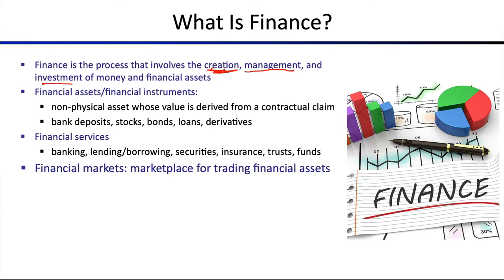The definition of money depends on how you look at it. Money could be defined by a central bank, it could be a token that you define and say 'this is money,' or you could define cattle as a form of money. Financial assets or financial instruments are non-physical assets in most cases whose value is derived from a contractual claim. They can be bank deposits, stocks, bonds, loans, derivatives, and so on.